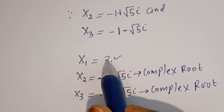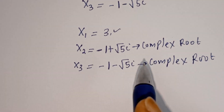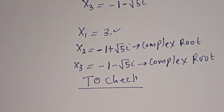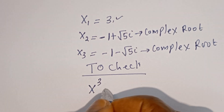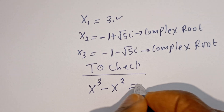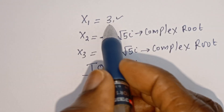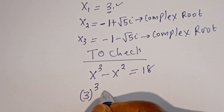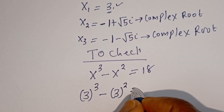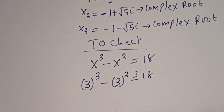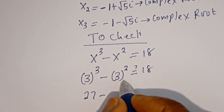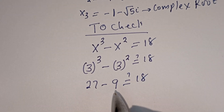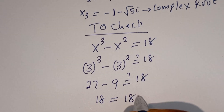The only real root is S equals 3. Let's check to confirm. We substitute into the given equation: S cubed minus S squared equals 18. When S equals 3, we have 3 cubed minus 3 squared, which is 27 minus 9, equals 18. This is true, confirming our answer is correct.